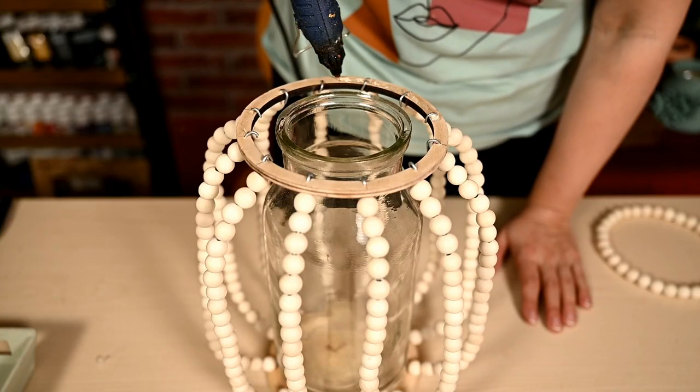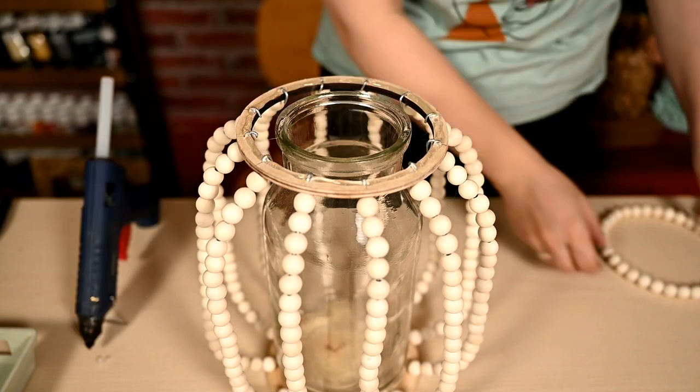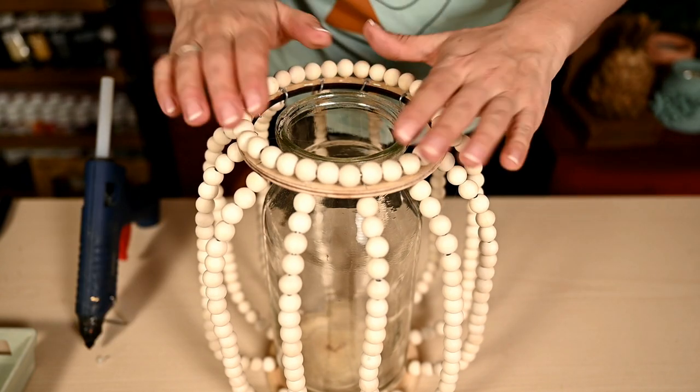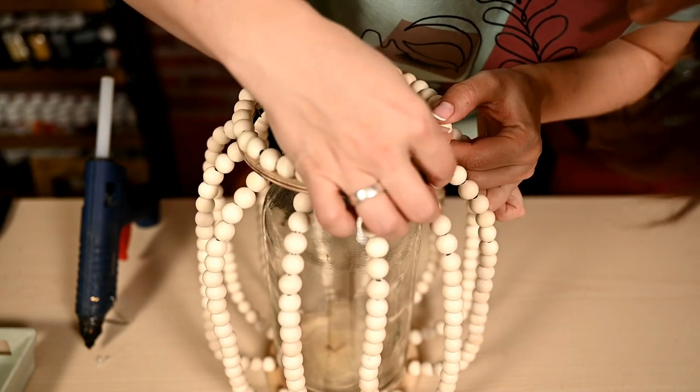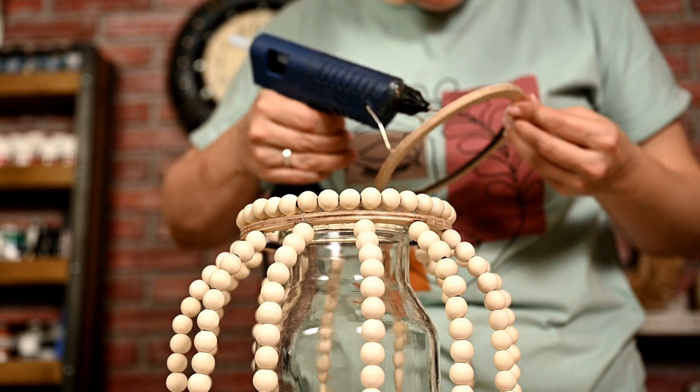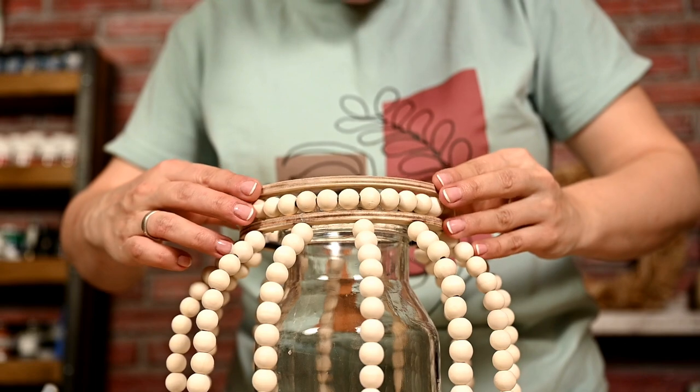Now I'll finish the top. I'm hot gluing the beaded ring onto the wooden ring. This will be the decoration and at the same time the beads hide the wire support tips. And I'm hot gluing the second wooden ring on top. As you remember, I had two of them in the set.